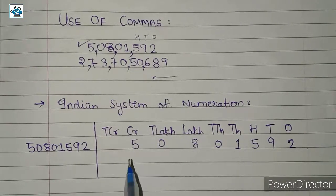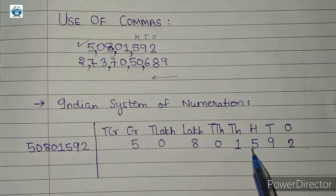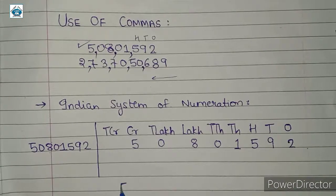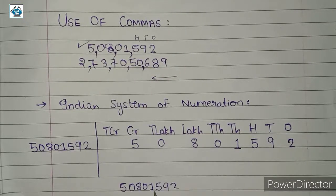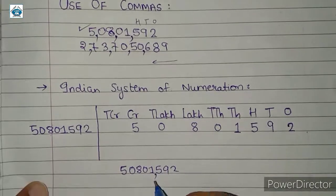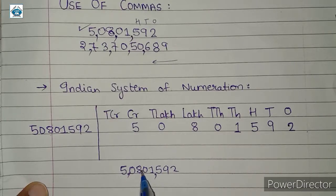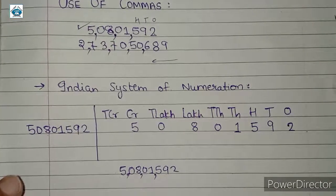So if we were to read this number, it is 5 crore 8 lakh 1592. Using commas, this number can be written as 5,08,01,592 — comma after 3 digits and then a gap of 2 digits. So we read it as 5 crore 8 lakh 1592.